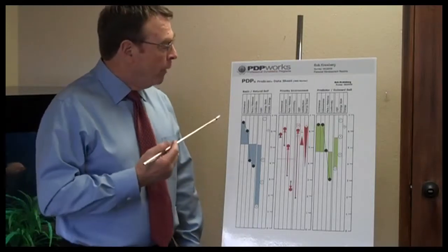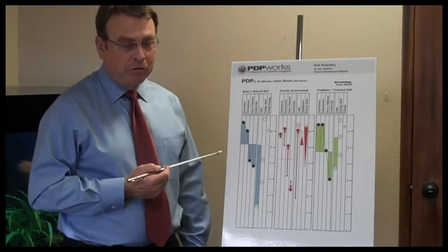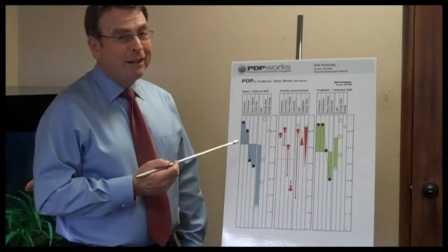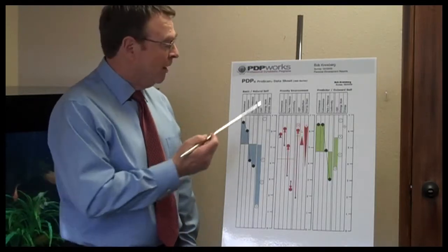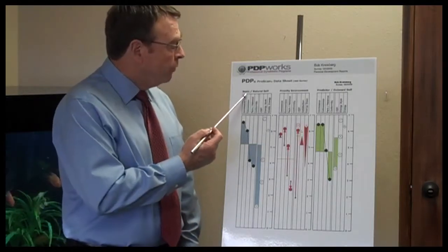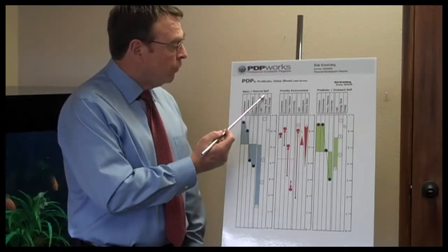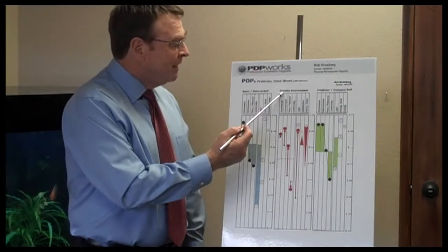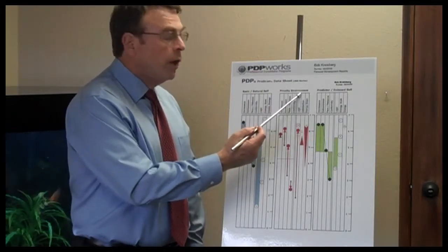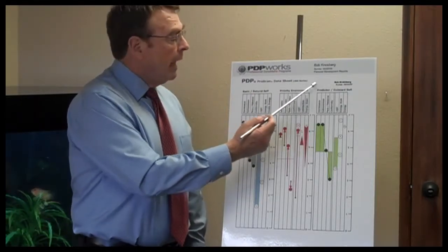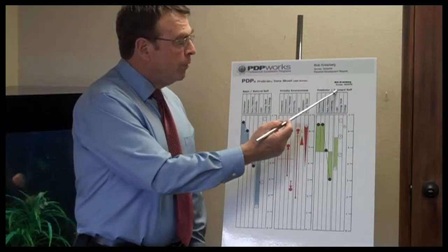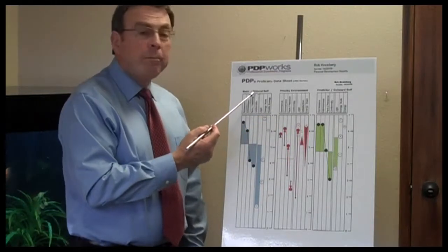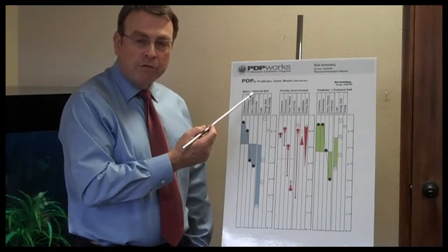We're going to break it up into three sections because there's really a lot to go over in each section. Section one is the basic natural self — that's the first video we're going to do. Second will be the priority environment, and then the third will be the predictor outward self. So we're going to start with the basic natural self.